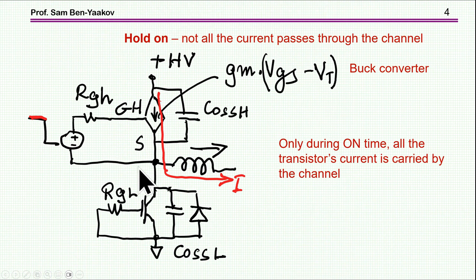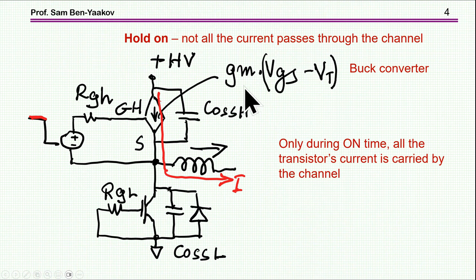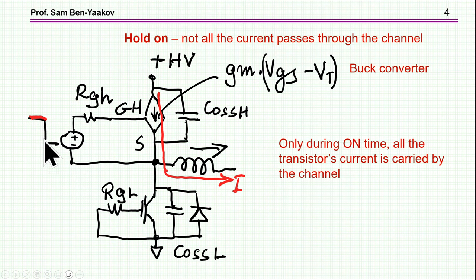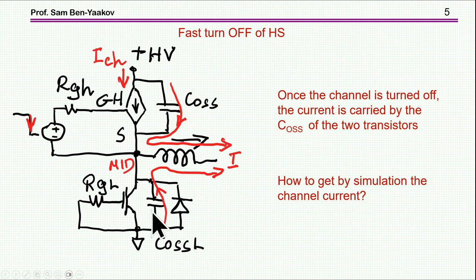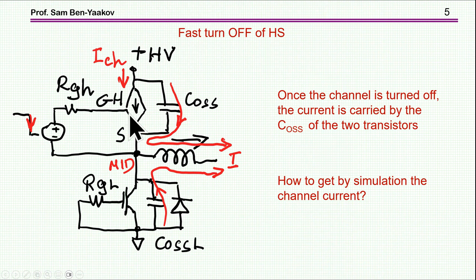But things are not that simple. If we look very carefully at the process of the turn-off and look inside the transistor — here I am representing the transistor as a dependent current source, GM times the voltage above the threshold, assuming GM is constant, and the output capacitance — before the turn-off, current is evidently passing through the channel. If we have a fast turn-off, then the channel is turned off quickly, and the current will now be passing through these capacitors, not through the channel. So during the process itself of the transition, there is no current in the channel, and therefore no loss within the channel. There is energy stored in the capacitor, but no loss in the channel.